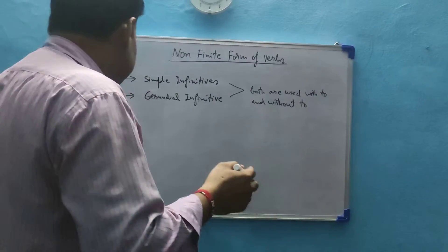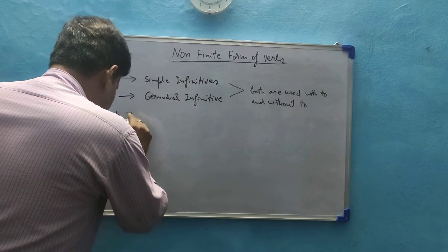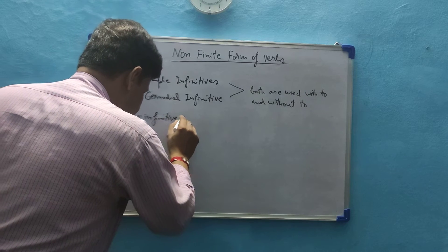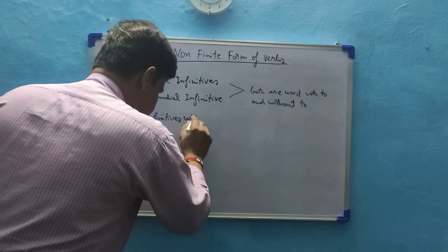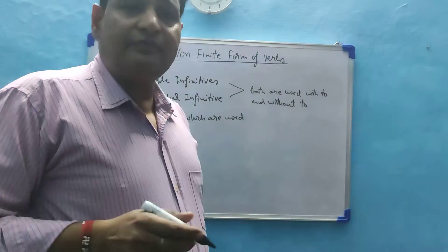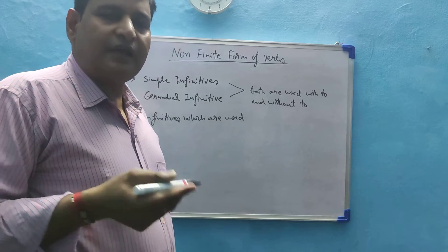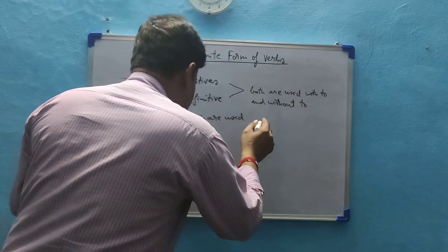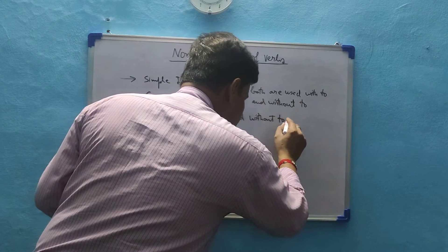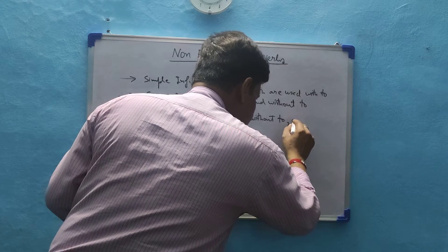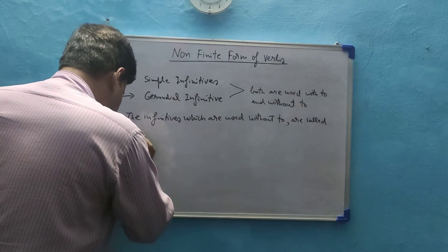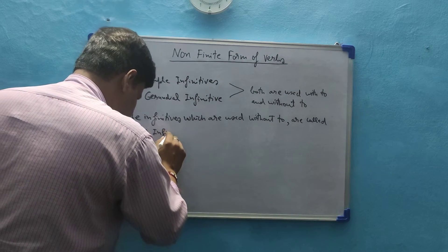Participles are verbal adjectives. And gerunds are verbal nouns. Today in this class we are going to understand infinitives — what they are and what their uses are. Participles and gerunds will be understood in other classes.